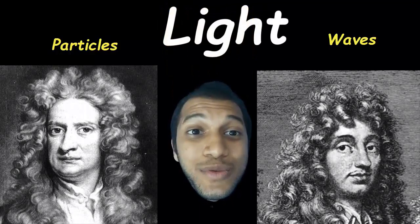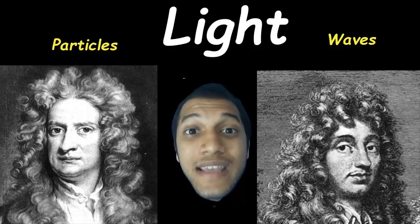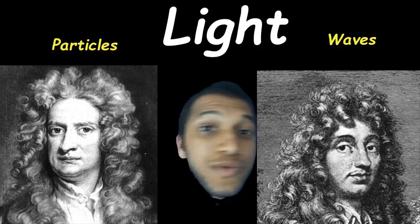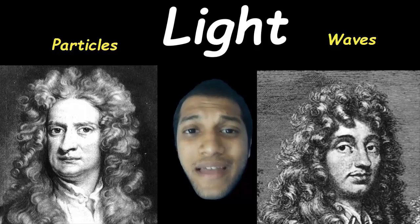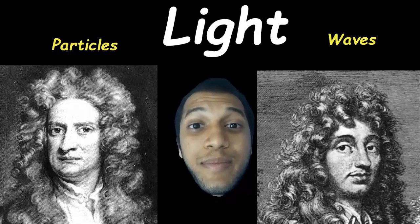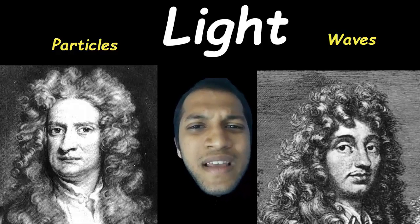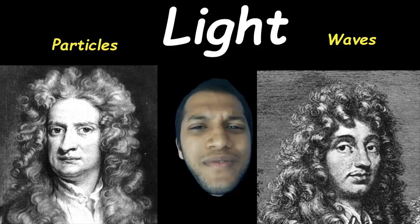So now we have a big competition. We have to think which one is right. Whether light is waves, like Huygens is saying, or light are particles, like Newton is saying. Well, during that time, Newton was a very famous man. He had already formulated his laws of motion. He had unified the concept by introducing the universal law of gravity. Definitely people would agree with Newton.